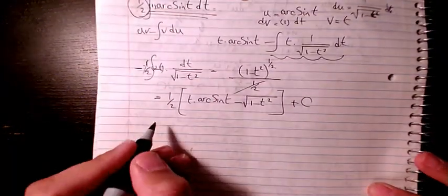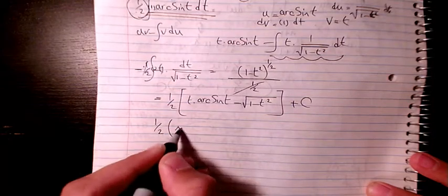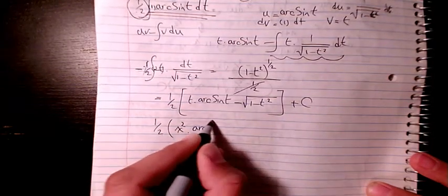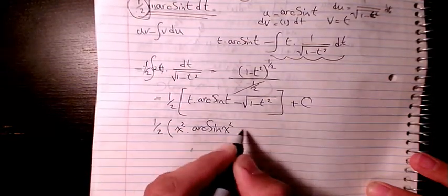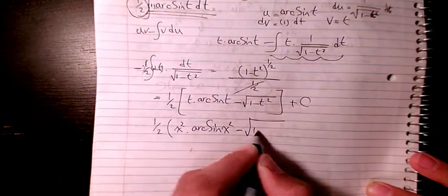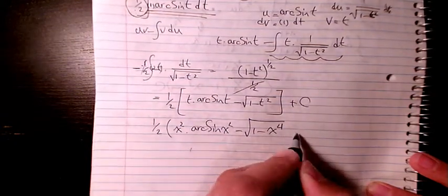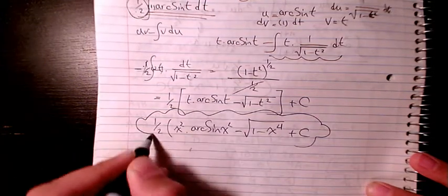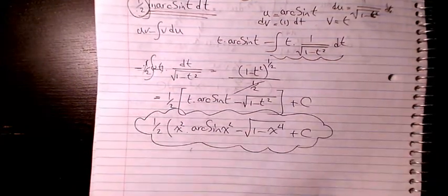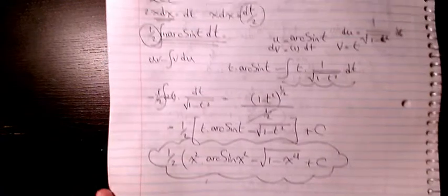So I can write 1 over 2, x² arcsin(x²) minus square root of 1 minus x to the power of 4, plus c. So that's going to be the final answer to this question.